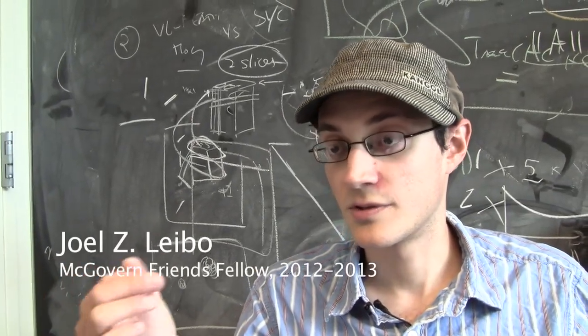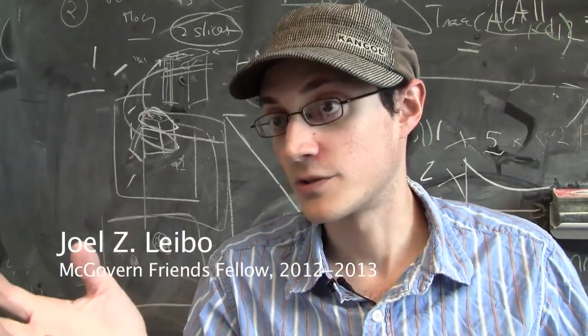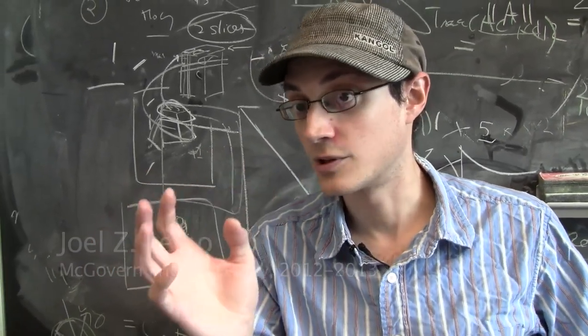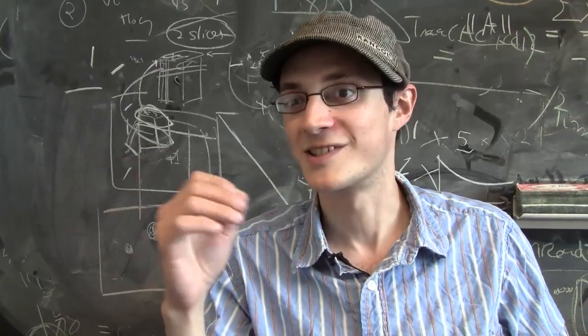I'm Joel Lebo, I'm a fourth-year graduate student here in the McGovern Institute. I work with Tommaso Poggio and I'm interested in vision and learning—how we learn to see and how we can build computers that also learn to see.